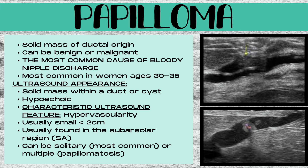The ultrasound appearance of a papilloma is a solid mass within a duct or a cyst. It's a hypoechoic mass, and the characteristic ultrasound feature is hypervascularity. These are usually small, less than two centimeters in size, and most commonly they're found in the subareolar region of the breast.